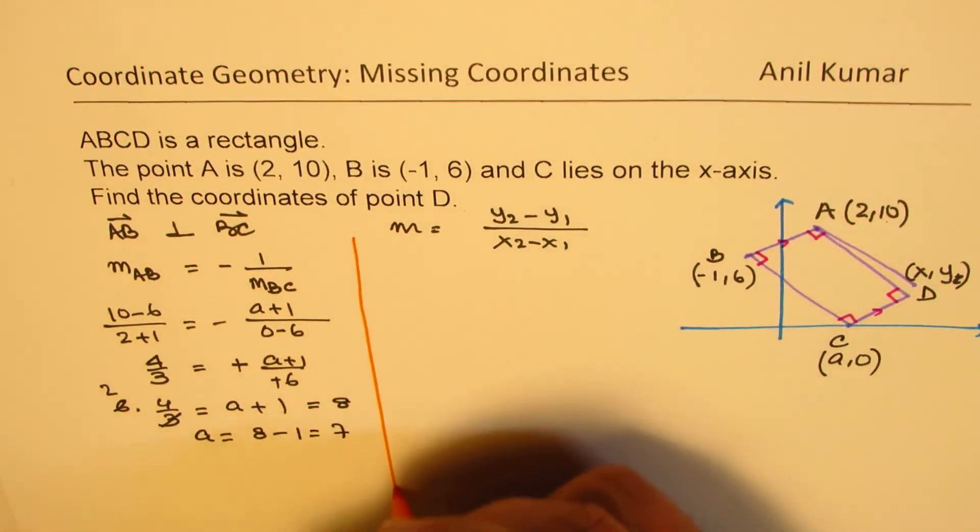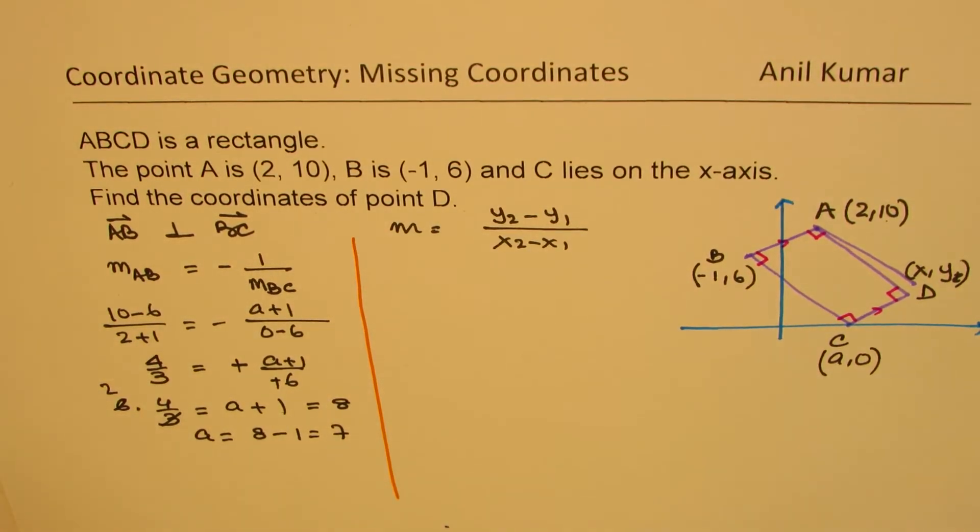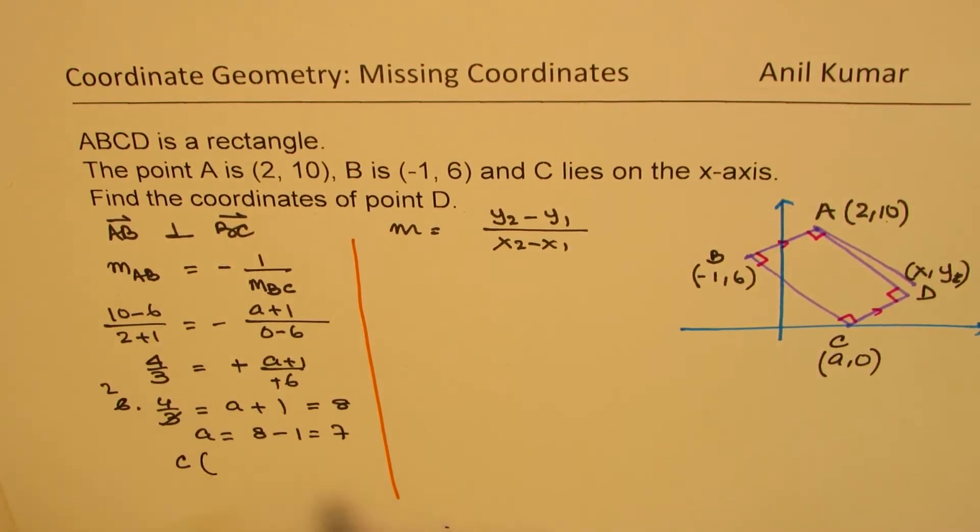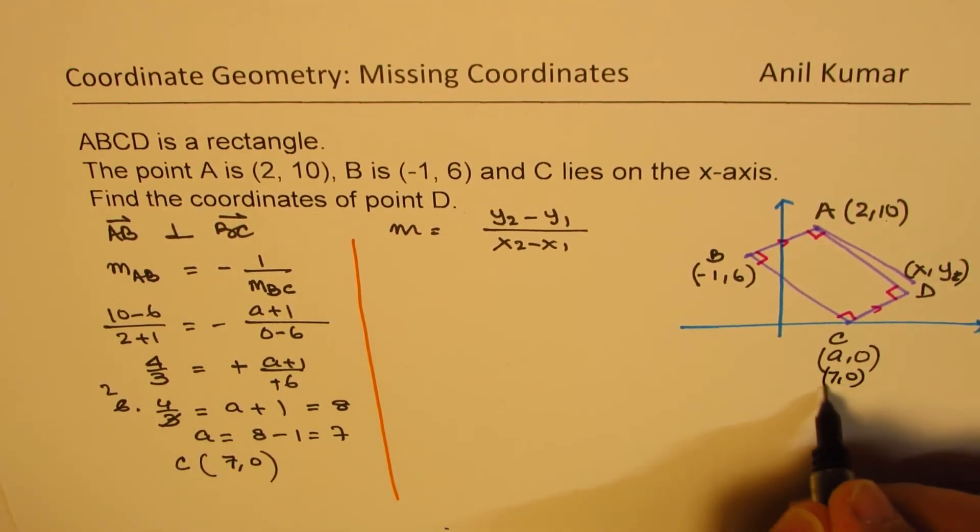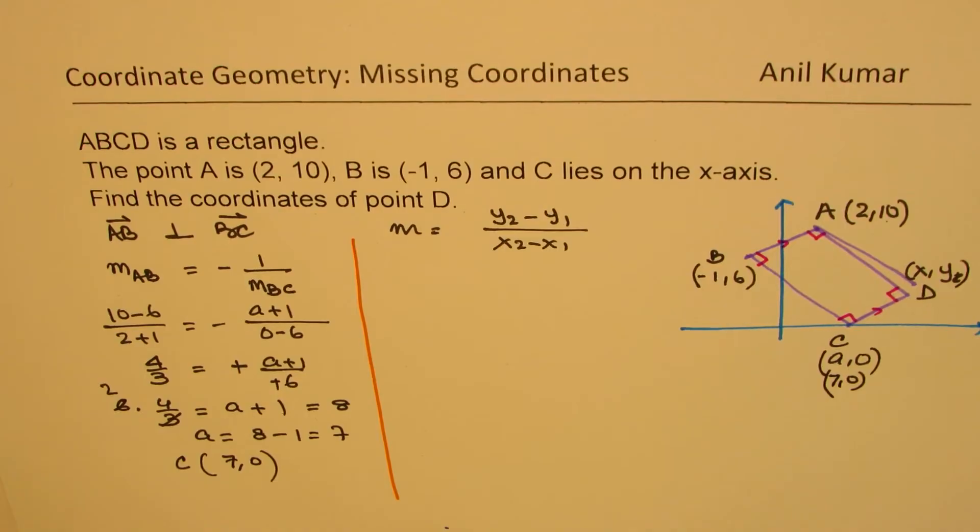So we get the coordinates of point C as (7, 0). So this point basically is (7, 0). Now it's easier to find coordinates of point D.